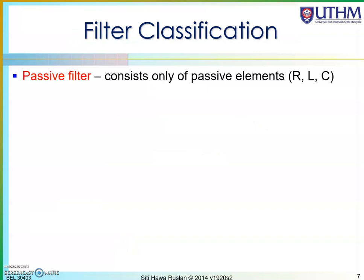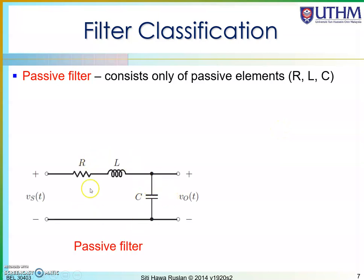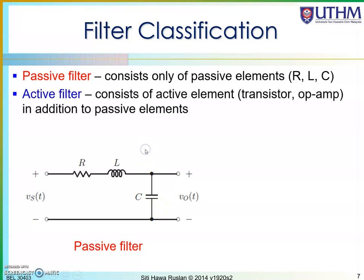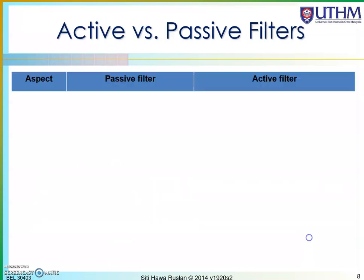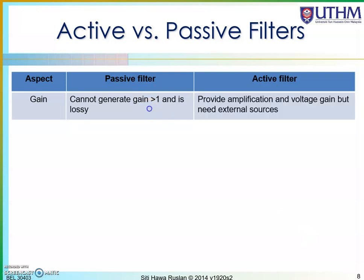A passive filter is a circuit that contains only resistors, inductors, or capacitors — all passive elements. An active filter consists of active elements such as an op amp or transistor along with RLC components. The key difference in terms of gain: a passive filter has a maximum gain of one, so it is called a lossy filter, whereas an active filter provides amplification with a certain gain, but requires an external power supply.